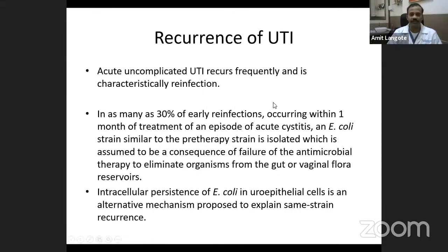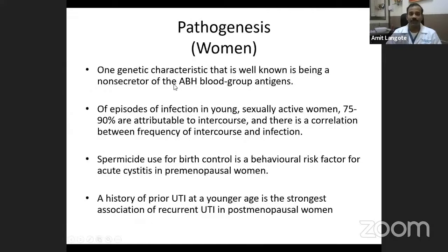E. coli is the most common organism causing reinfection. One reason is failure of antibiotics to eliminate the organism, and there is possibly a persistence of E. coli in the uroepithelial cells which allows it to escape antibiotic eradication. Recurrent UTI is most commonly seen in women. Predisposing factors include genetic reasons — non-secretor status of ABH blood group antigens — sexually active young women, post-sexual intercourse, use of spermicidal jellies that alter local flora, or a prior UTI at a younger age.